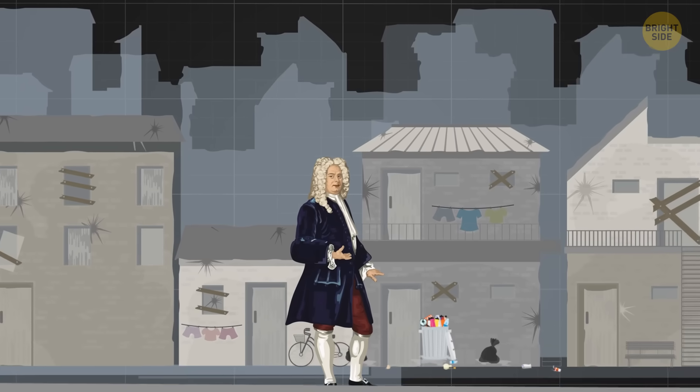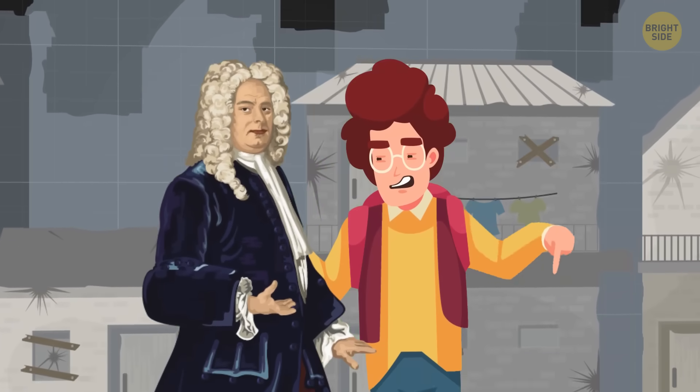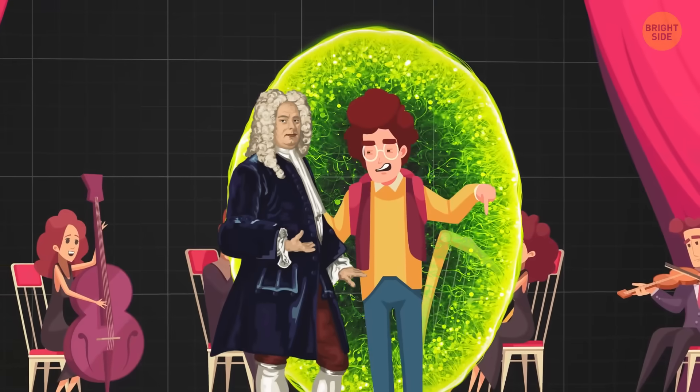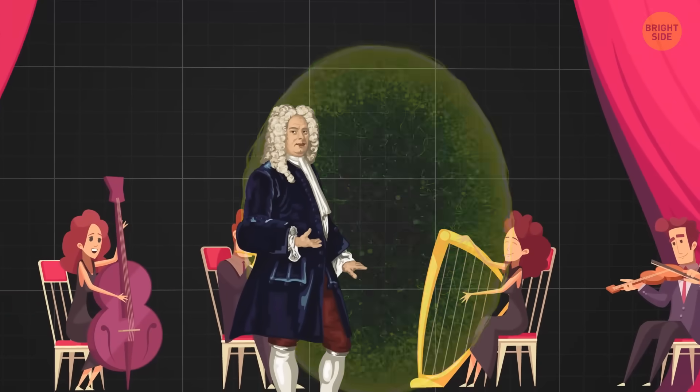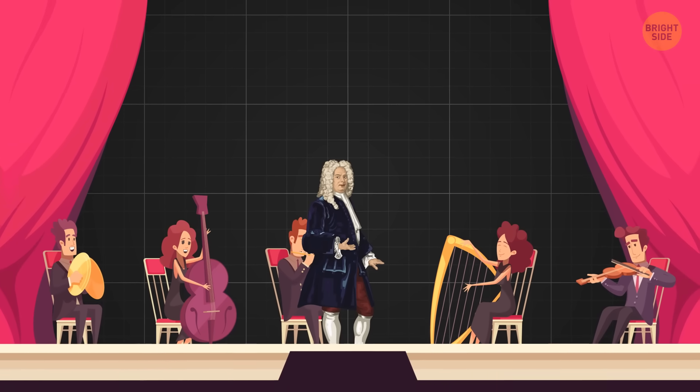There's also the bootstrap paradox. Let's say we travel back in time and give Beethoven his own compositions before he ever penned them. He gets famous for the very music you provided. But where did it originate? Did you start it? Or was it Beethoven who started it?